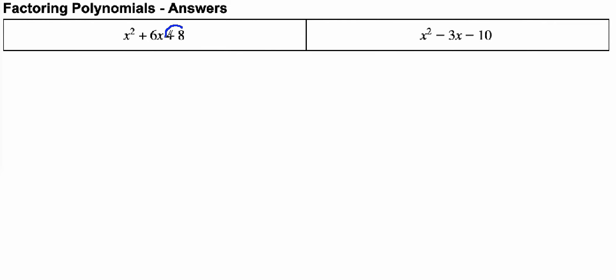This means I need to find two numbers that multiply to positive 8 and add to positive 6. So I'm going to write my problem down like this.